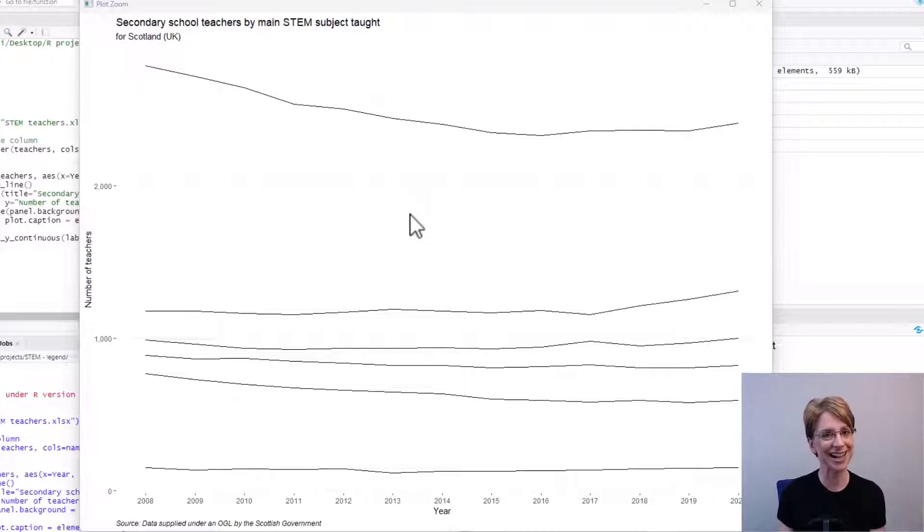From the diagram we cannot tell currently which subject is represented by which line therefore to aid the user we will add the legend.